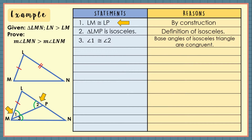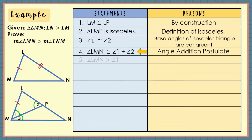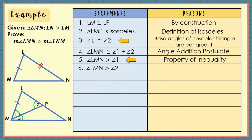Number 4, from the illustration, angle LMN is equal to angle 1 plus angle 2 by the angle addition postulate. Next, based on statement number 4, angle LMN is greater than angle 1 because of the property of inequality. Number 6, using statements 3 and 5, since angle 1 is congruent to angle 2 and angle LMN is greater than angle 1, thus angle LMN is also greater than angle 2 — by substitution property.